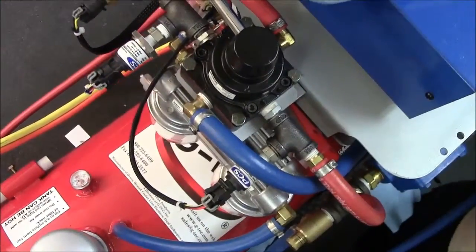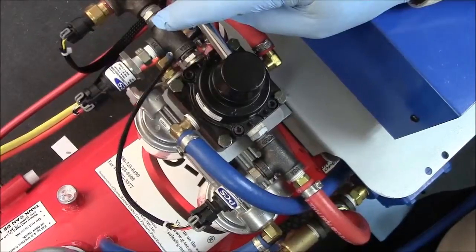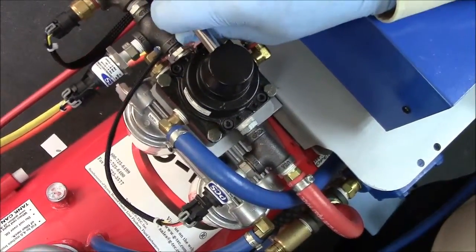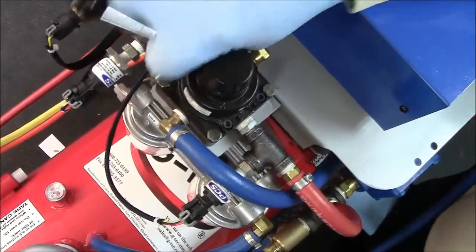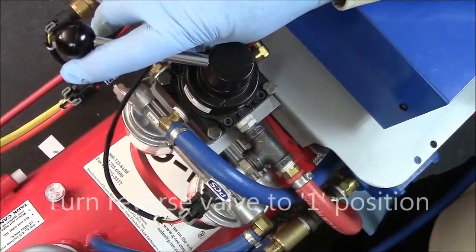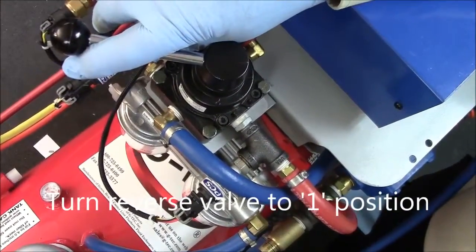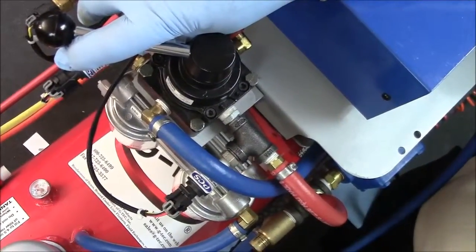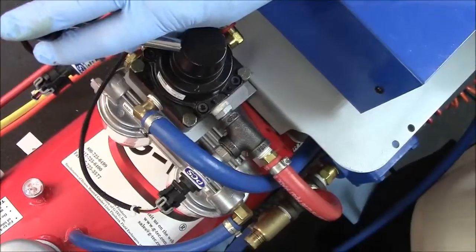On your reverse valve you'll notice it has a one position, an end position for neutral, and a two position. In order to purge properly, put it in the one position. Leaving the flusher in the neutral position for a long length of time can damage your motor and cause excess pressure on the lines.